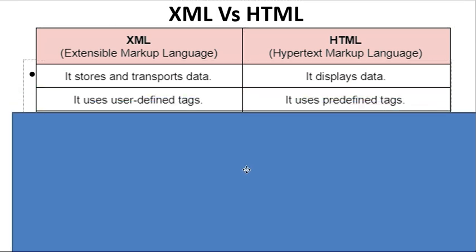The second difference is: XML uses user-defined tags. There are no restrictions in XML — you can use any name as a tag. For example, if you are writing a program for a student, you can write the student's name as a tag.